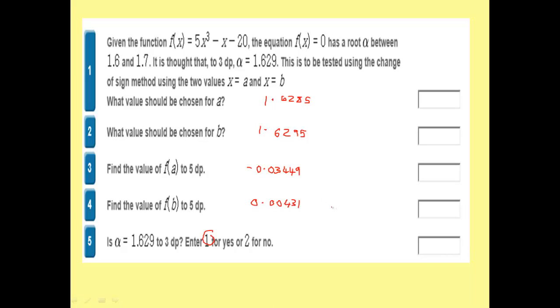OK, so this is what you should have got. You can see here that this is the lower bound that would round up to 1.629 to 3 decimal places. This is the upper bound.